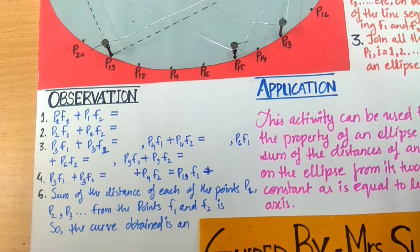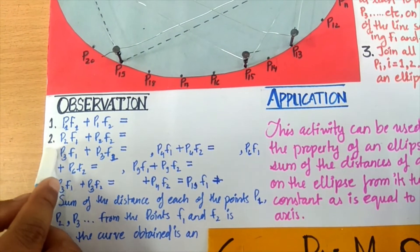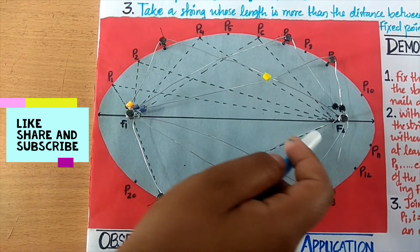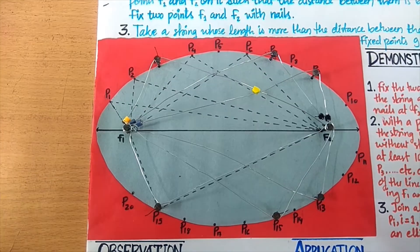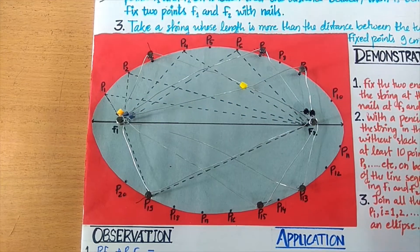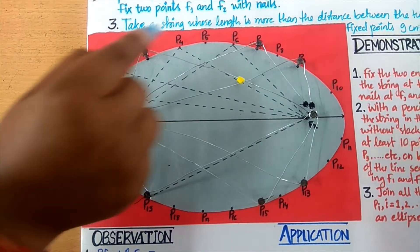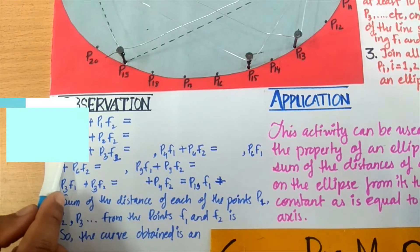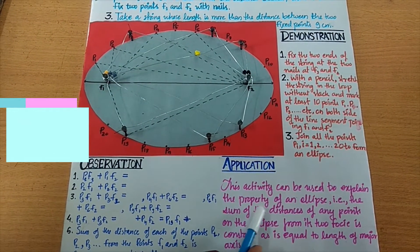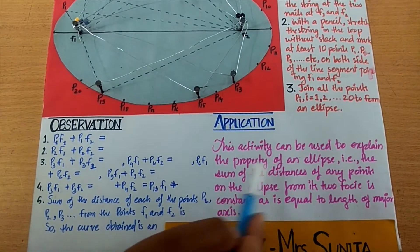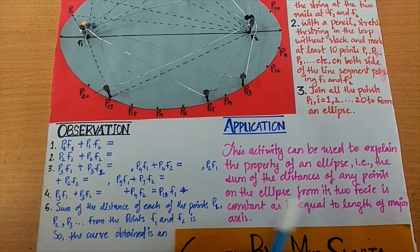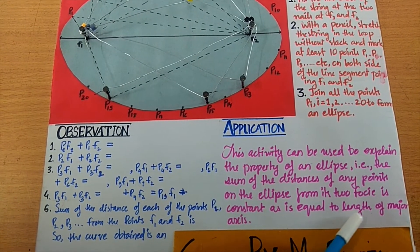Similarly, P2F1 plus P2F2 is also equal to the length of the string, which is constant. For all such points, we join them all in the form of an ellipse. An application of this activity is that it can be used to explain the property of an ellipse: the sum of the distances of any point on the ellipse from its two foci is constant and is equal to the length of the major axis.